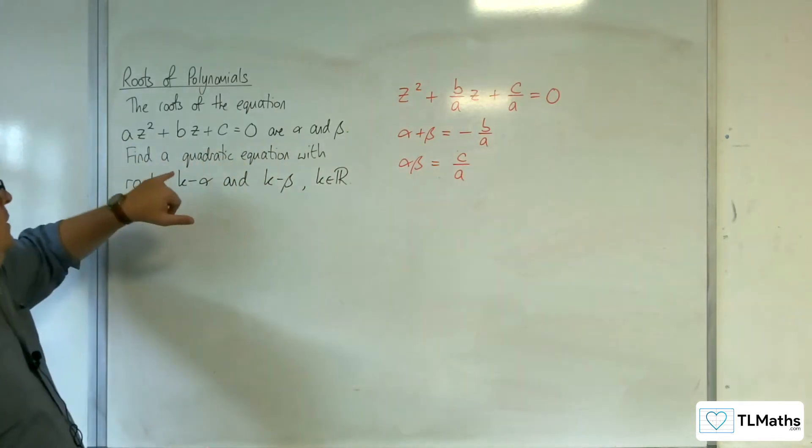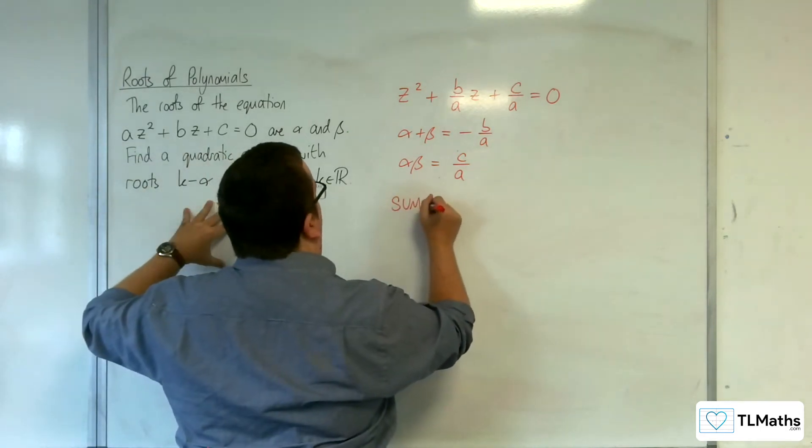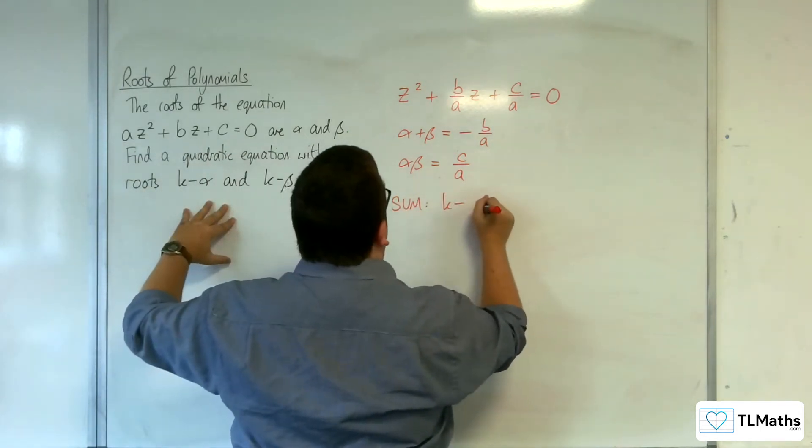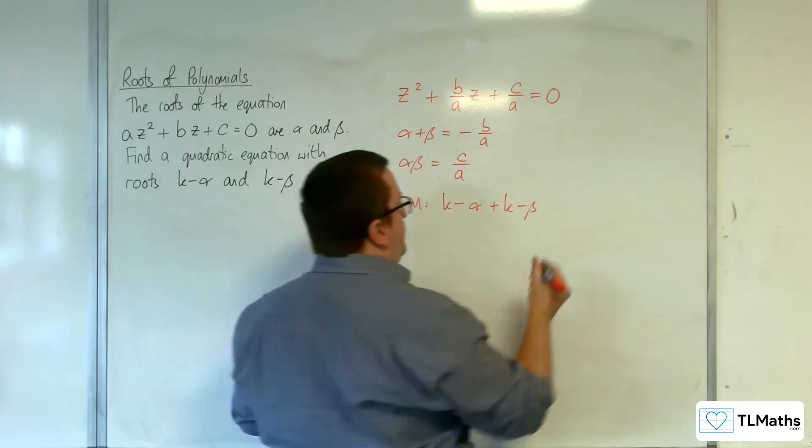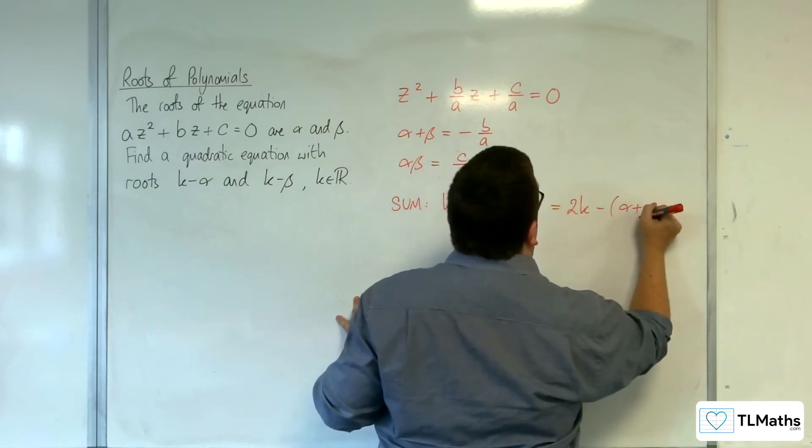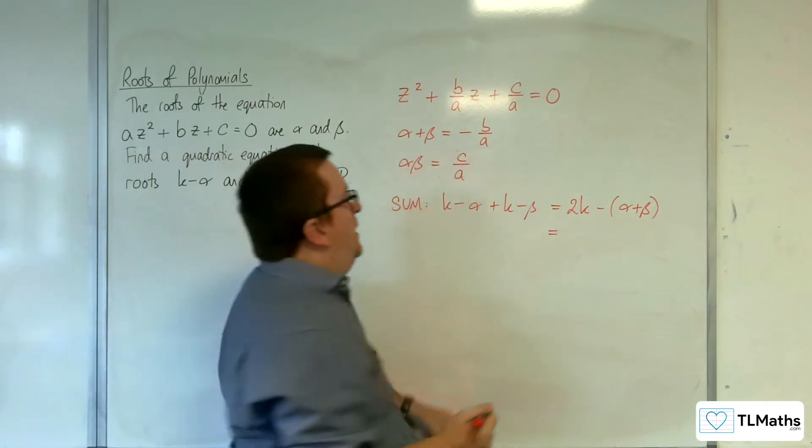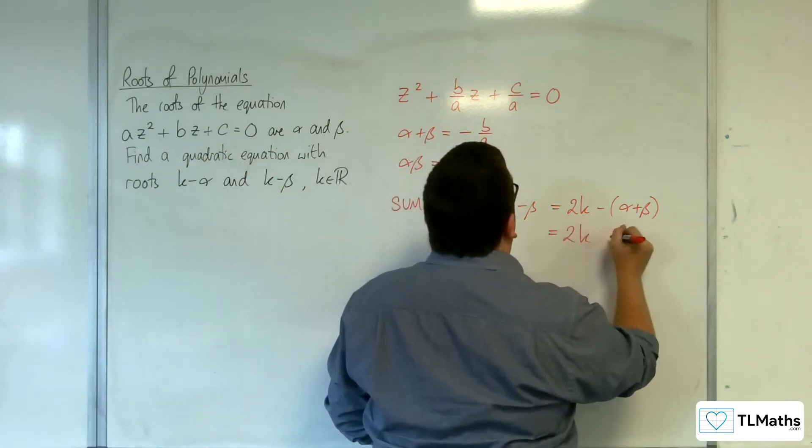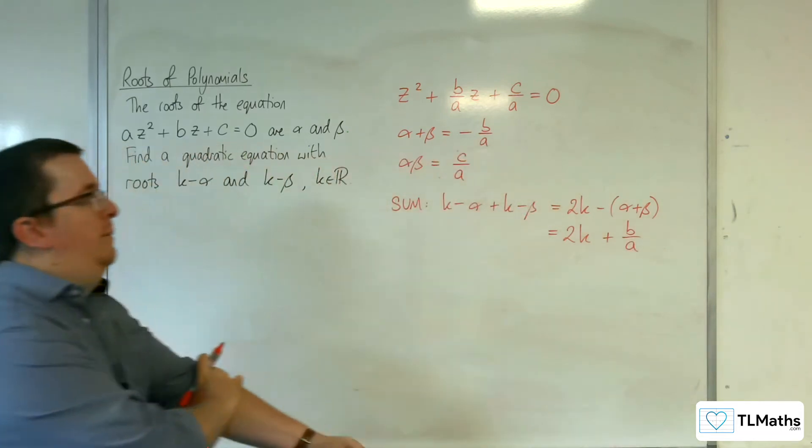So the new quadratic equation must have the sum of the roots to be k minus alpha plus k take away beta. So that's 2k take away alpha plus beta. So alpha plus beta is minus b over a, so 2k plus b over a must be the sum of the roots.